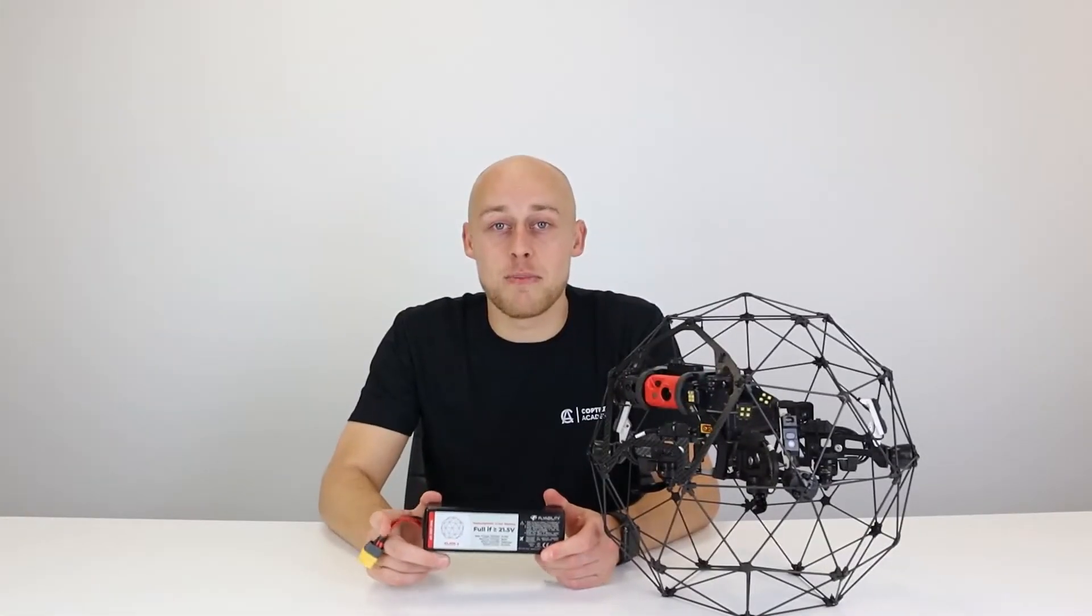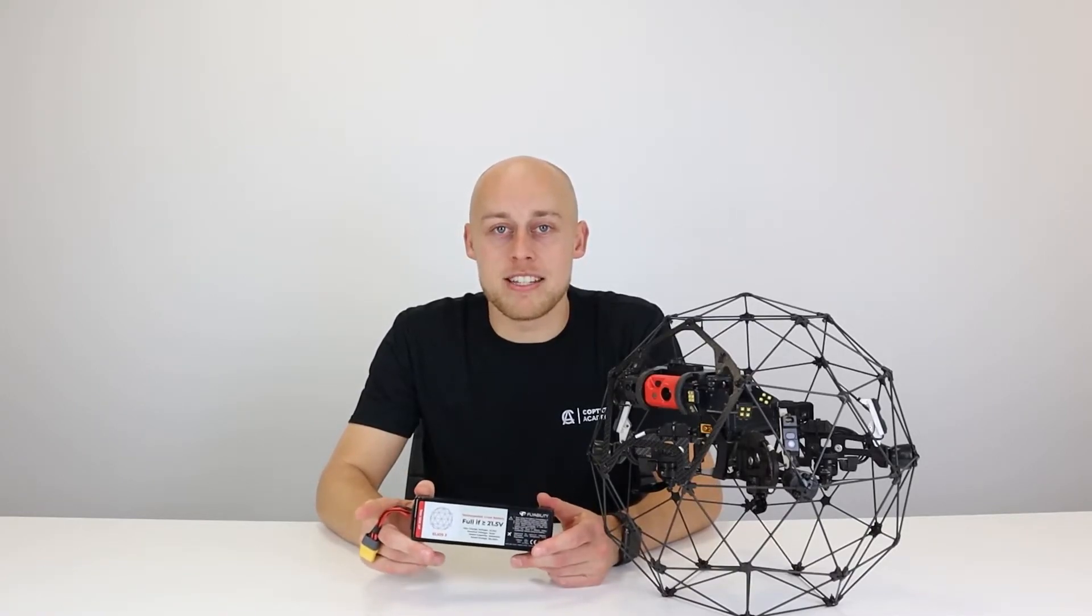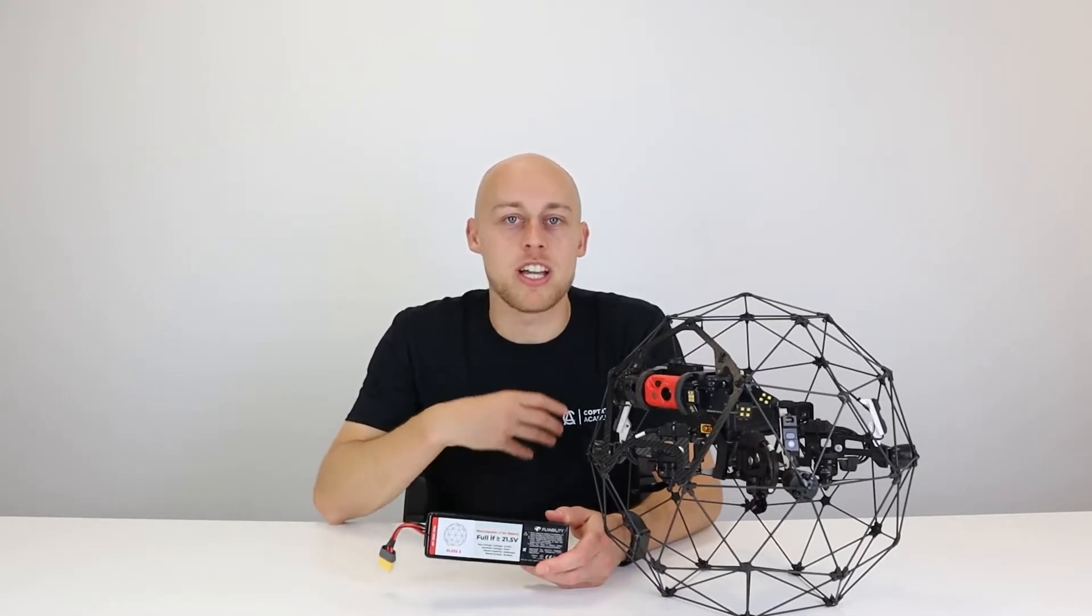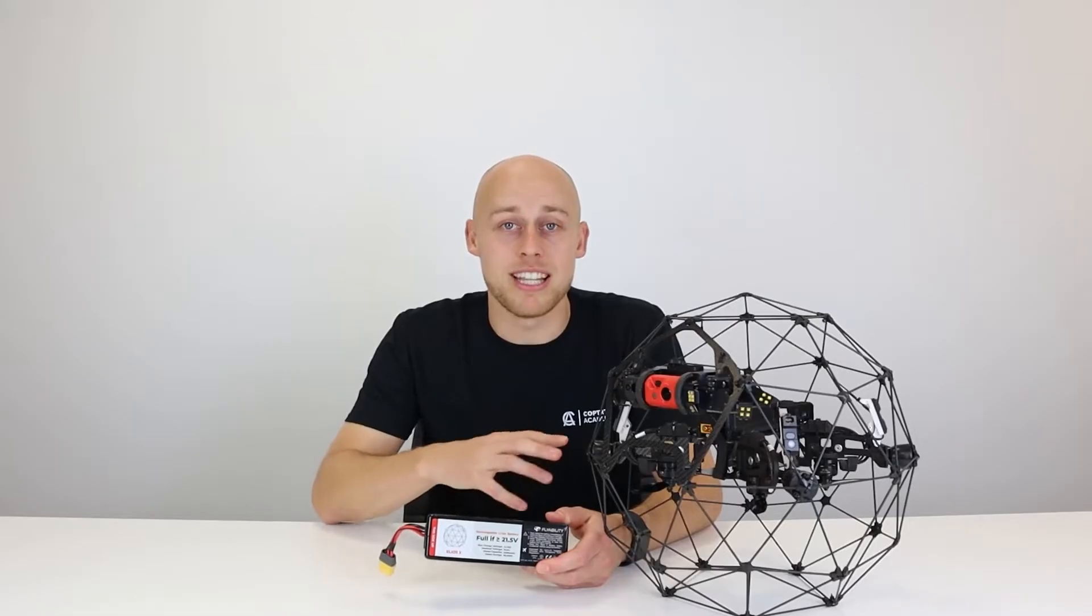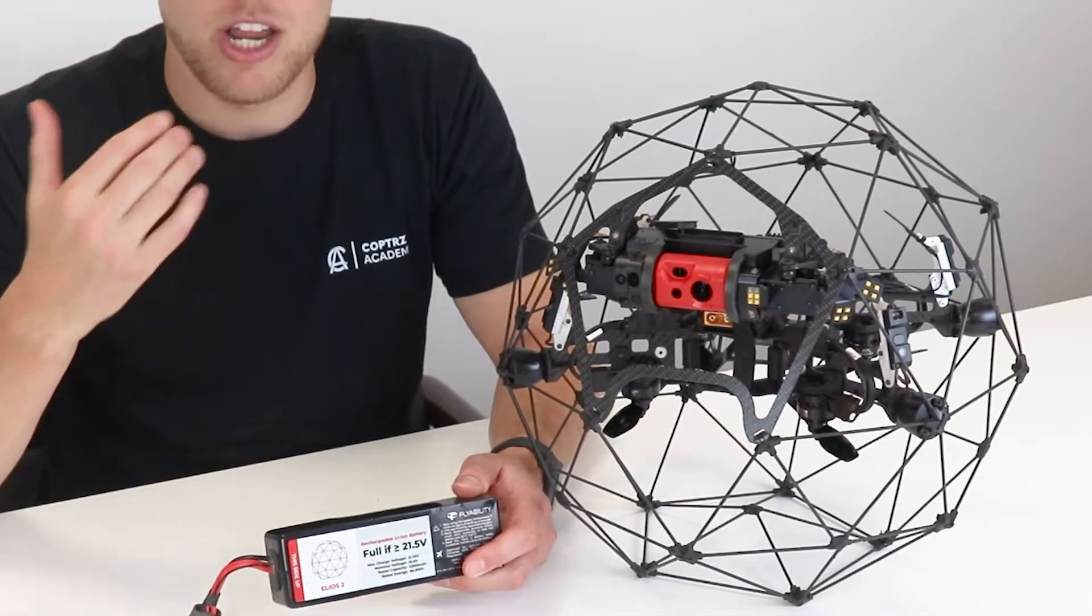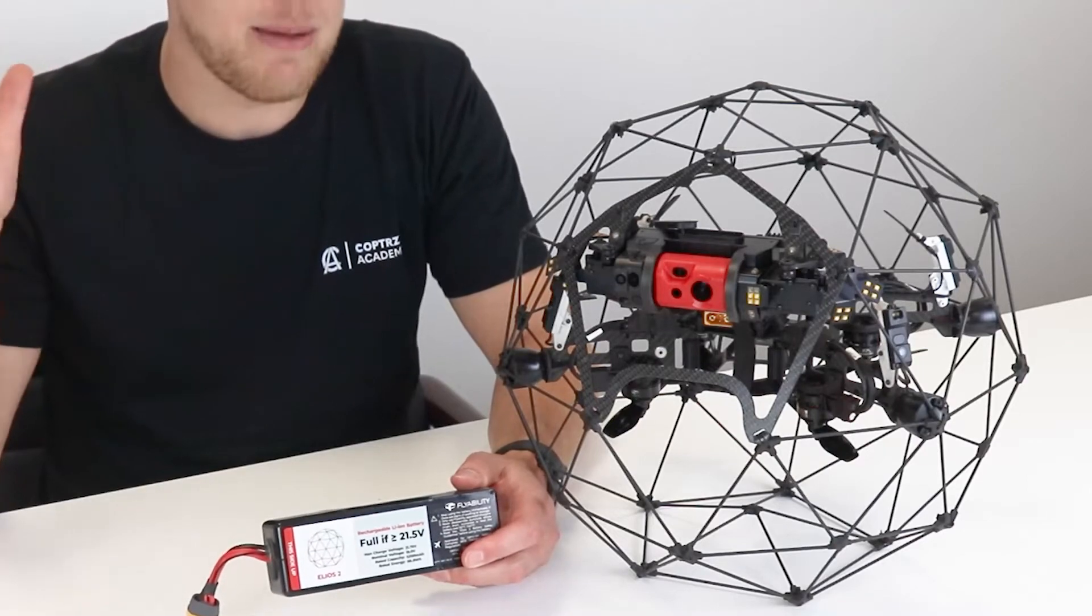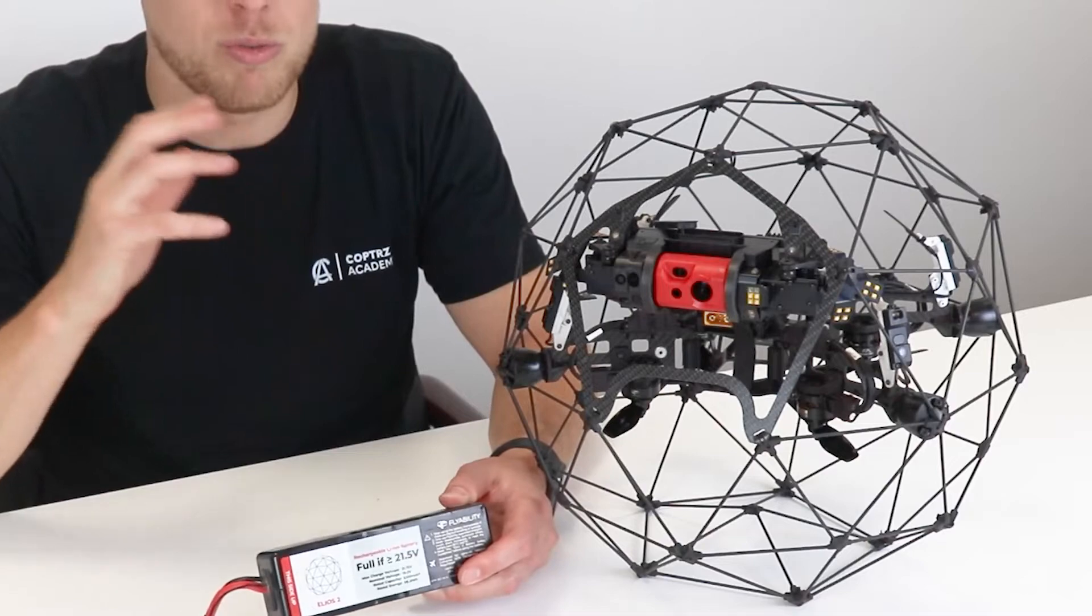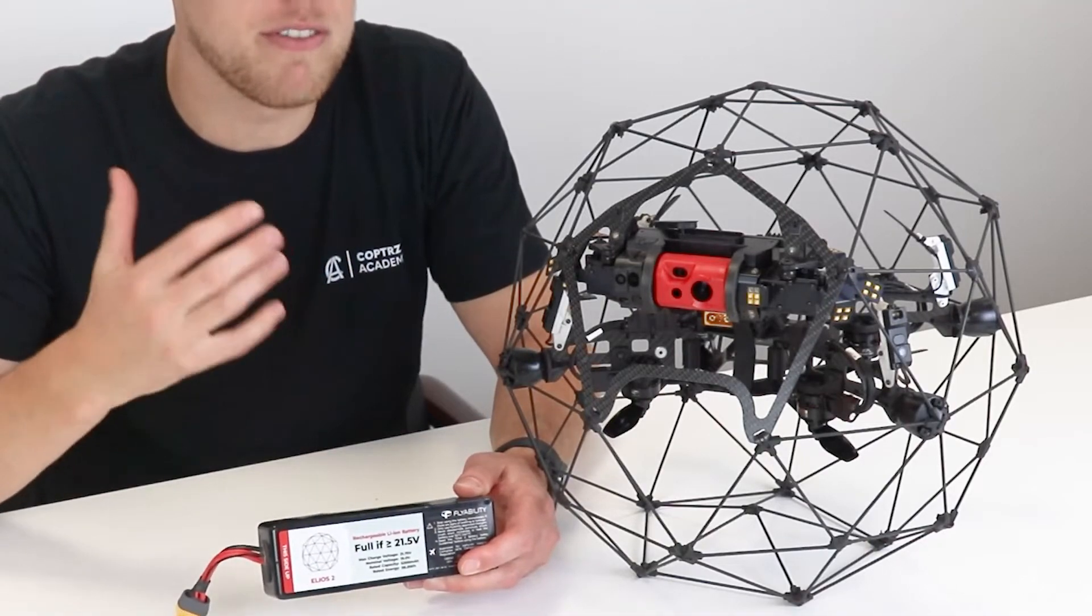This is the Elios 2 battery. It's a LiPo battery which has got 10 minutes of flight time. It might not seem like a lot, but when you're in an internal space you can't see the drone any longer. 10 minutes actually feels like a lifetime, especially when you're inside inspecting something that is maybe a couple of meters away from you. You're capturing a lot of data and footage. You'll actually find that you sometimes don't even use maybe five or six minutes.